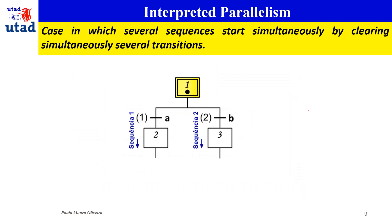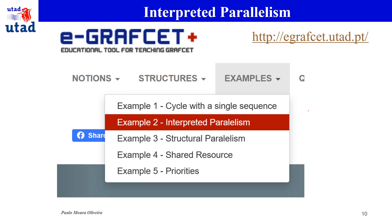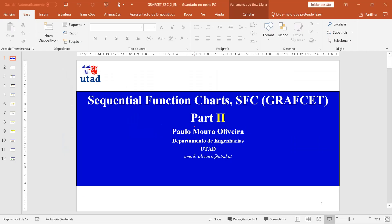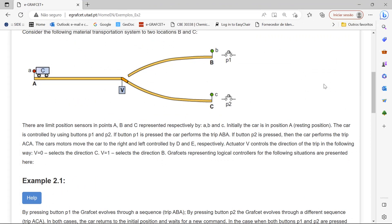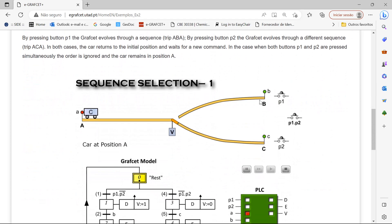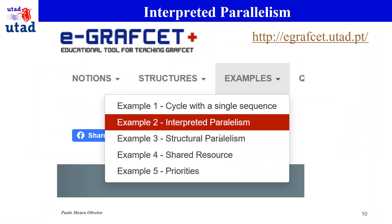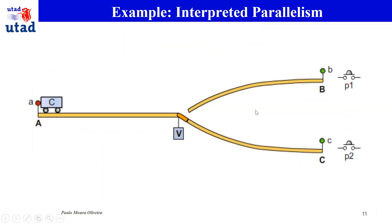We are going to see now one example that is in graph set plus. This is example 2, which is interpreted parallelism. We have a division between interpreted and structured parallelism. This one is called interpreted because it depends on the interpretation of the transition conditions. I'm going to go to a graph set now, as you can see here — this is the example.